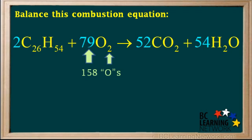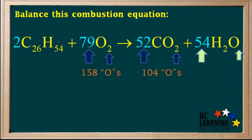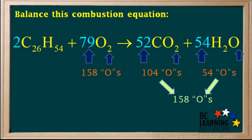We have 2 times 79 equals 158 oxygens on the left side. Looking on the right side, we have 2 times 52 equals 104 oxygens in the CO2. And 1 times 54 equals 54 oxygens in the water. So the total number of oxygens on the right is 104 plus 54, which equals 158 oxygen atoms. Since there are 158 oxygens on both sides, oxygen atoms are also balanced.